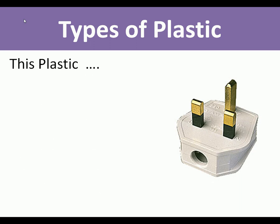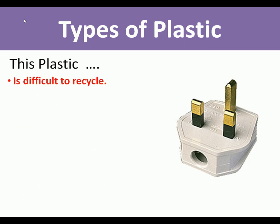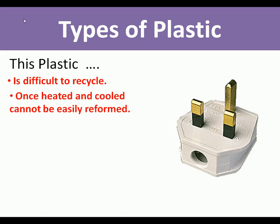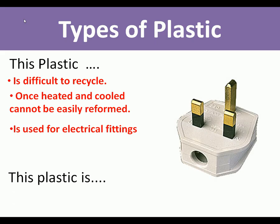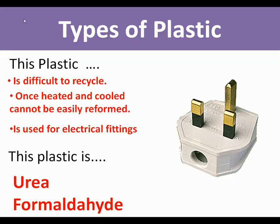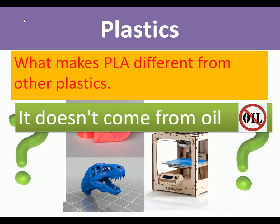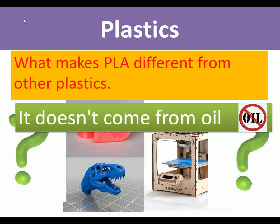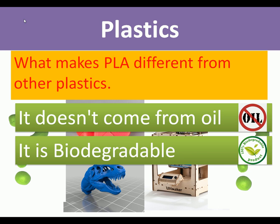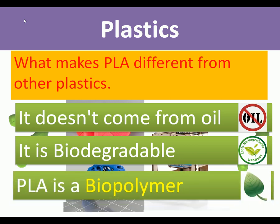This plastic is difficult to recycle, once heated and cooled cannot be easily reformed, and is used for electrical fittings — this plastic is urea formaldehyde. What makes PLA different from other plastics? It doesn't come from oil, it is biodegradable, and it is a biopolymer.